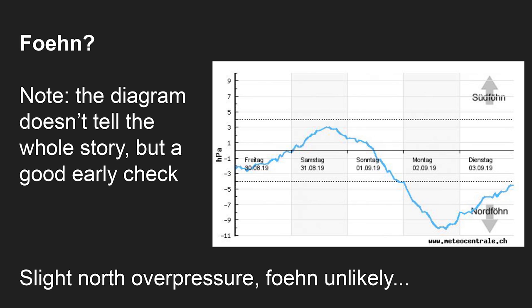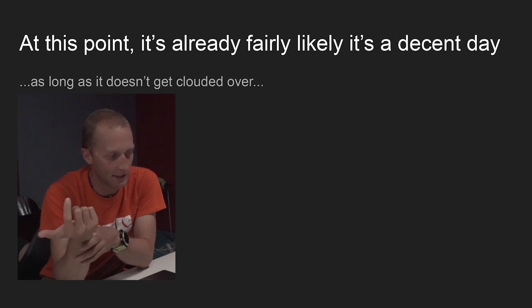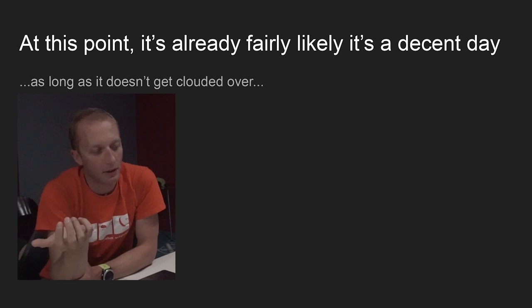I often check the foehn graph. Benny from Chillout will tell you not to even look at this graph because it doesn't tell the whole story — but particularly if, for example, Monday looked really sunny in Ticino and I was considering going there, and I look at this graph and it explains why it's sunny in Ticino, it's good to get a baseline idea of whether there's likely to be foehn. In this case for Friday, it was only one day away, with a slight north pressure difference — foehn unlikely. At this point it's already looking like a pretty decent day: very light winds, good temperature gradient. The question is whether it will get clouded over.